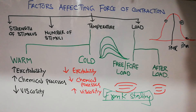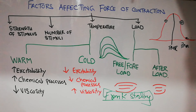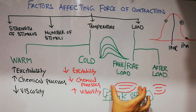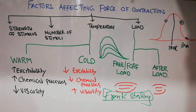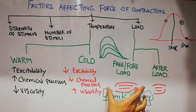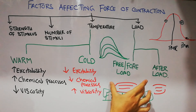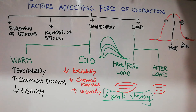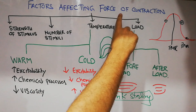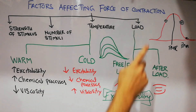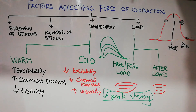In free or fore load, the Frank-Starling mechanism occurs. The Frank-Starling law states that the force of contraction of a muscle is directly proportional to the initial length. So the greater the initial length, the greater the contraction, and this phenomenon is more applicable in free load. Thus, after load decreases the force of contraction while free or fore load increases it.